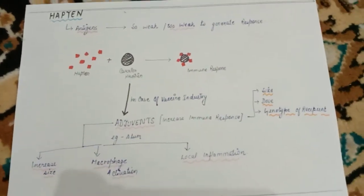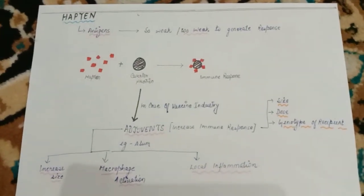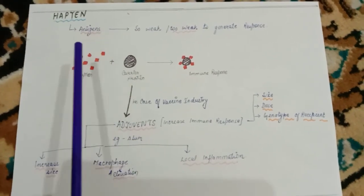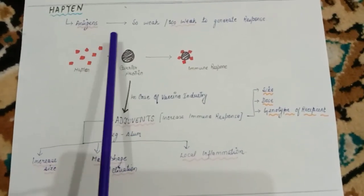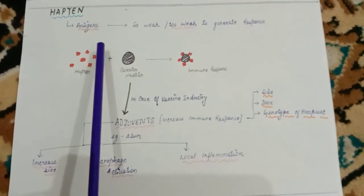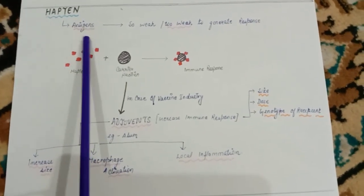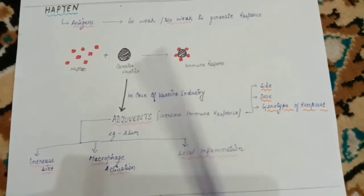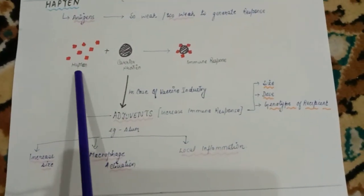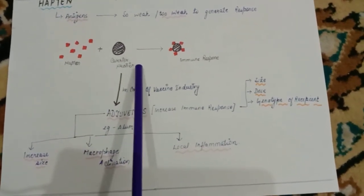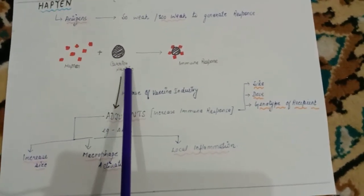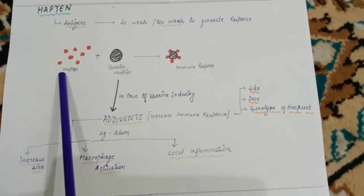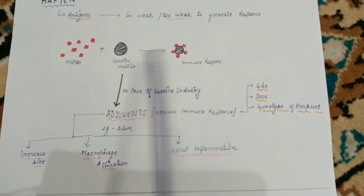The next topic is haptens. Since I am pursuing my PhD in this subject, we have rigorous research going on here. You will often see a statement calling haptens 'half antigen' — but that is not quite accurate. The best way to describe them: they are antigens, but they are too weak to generate an immune response on their own. This is the only distinguishing scenario in the case of haptens.